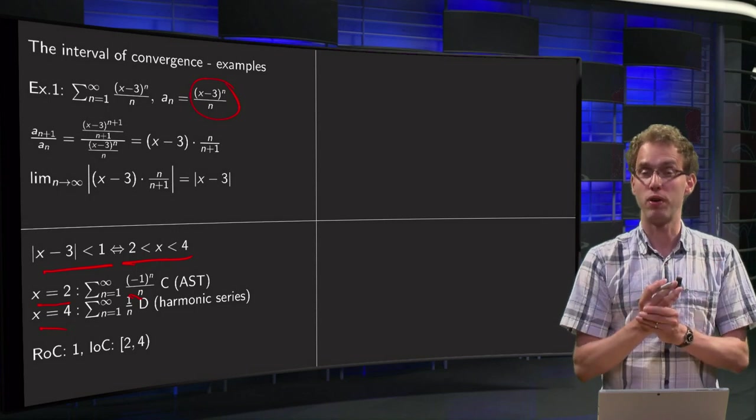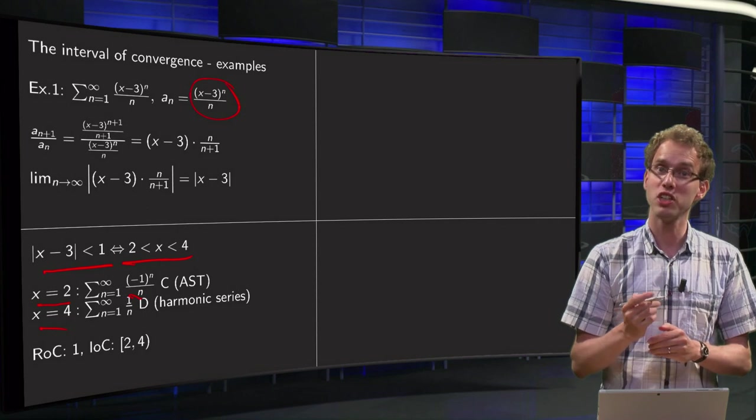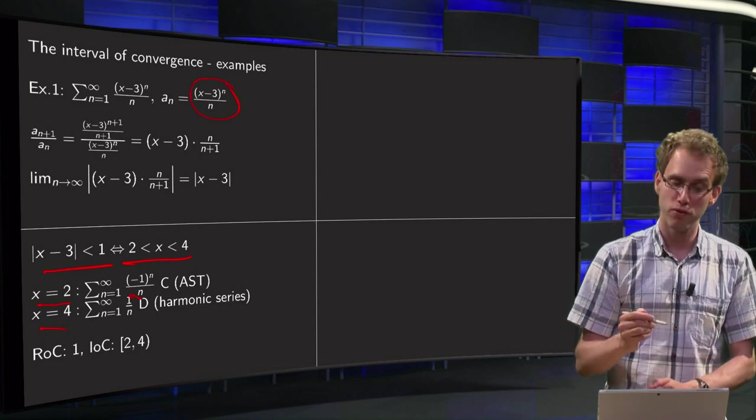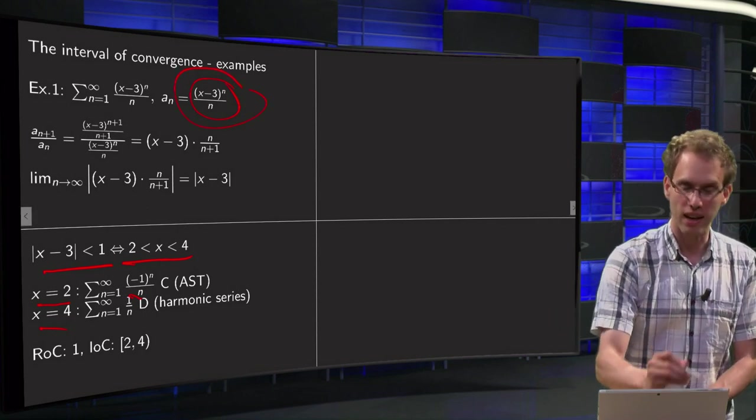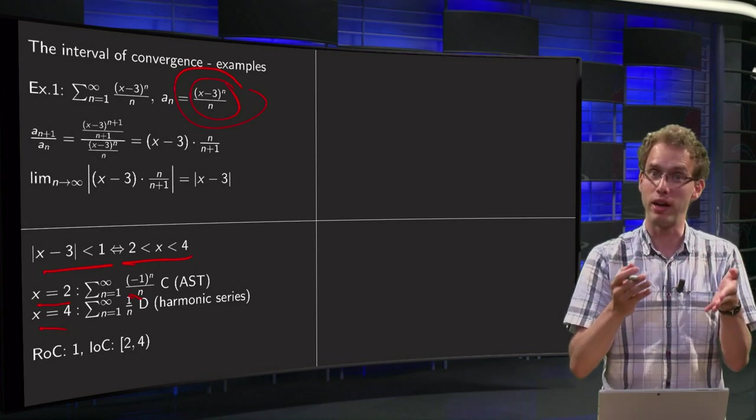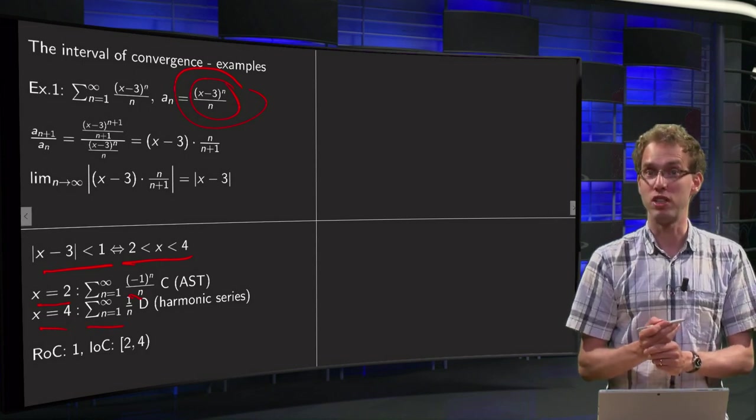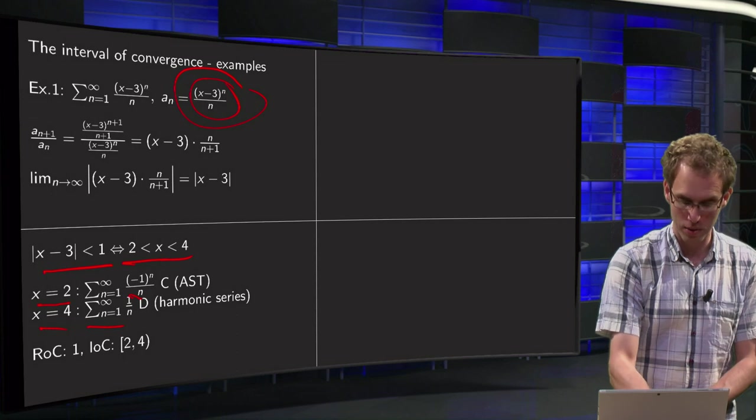And we know that it is convergence due to the alternating series test. Then we have x=4, plug it in again in the a_n, you get (4-3)^n, 4-3 equals 1 to the power n is just 1, so we have this series of 1/n, and we know that this is divergent because it is a harmonic series.